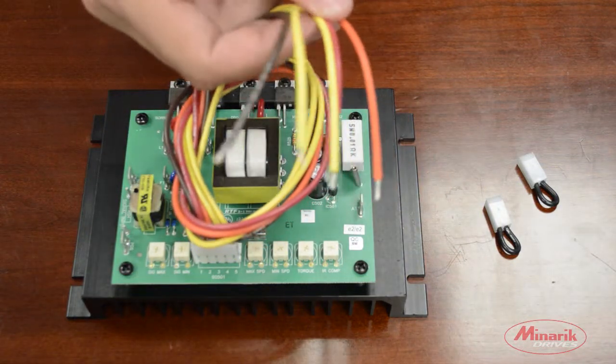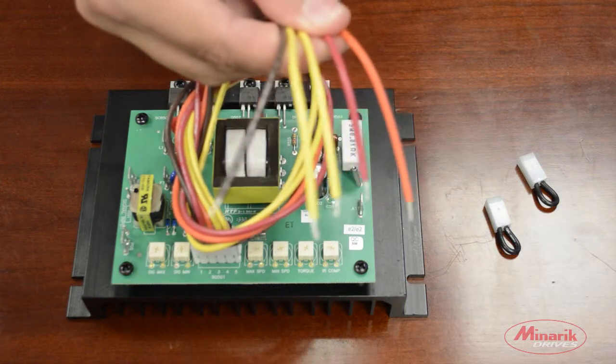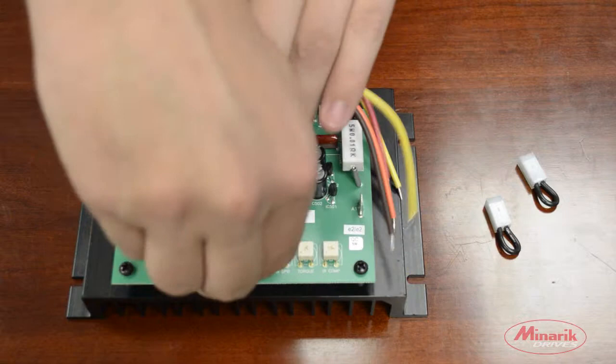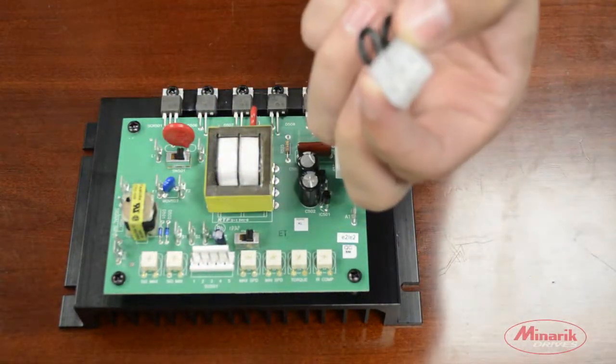These wires are used to connect up switches or the drive up to your PLC to switch between the different modes. For this demonstration, we'll be removing the header plug and using the jumpers instead.